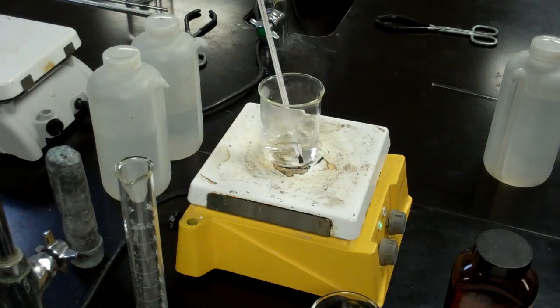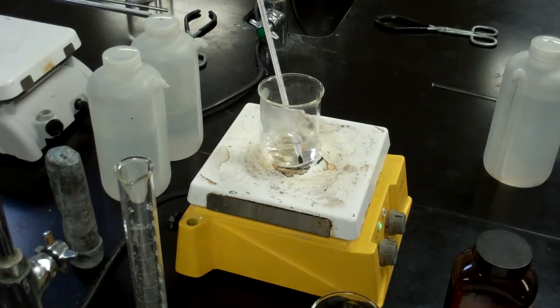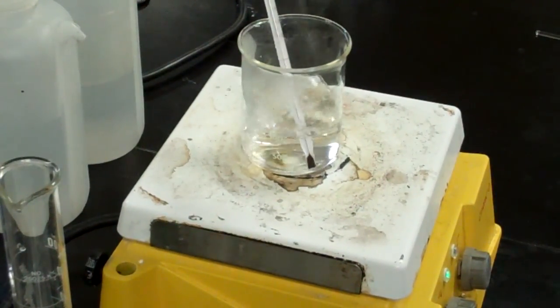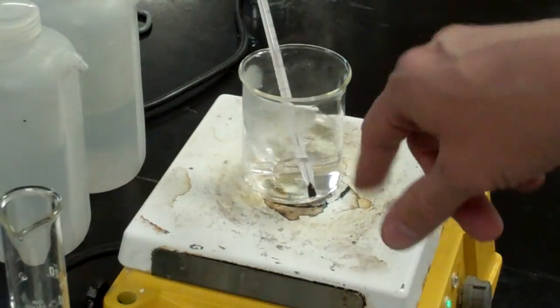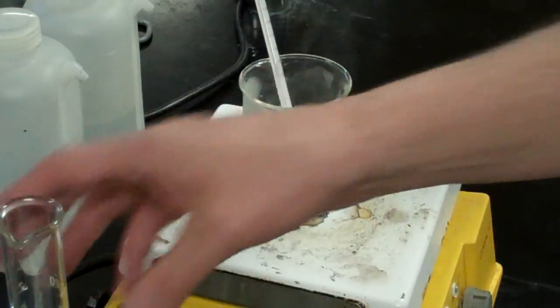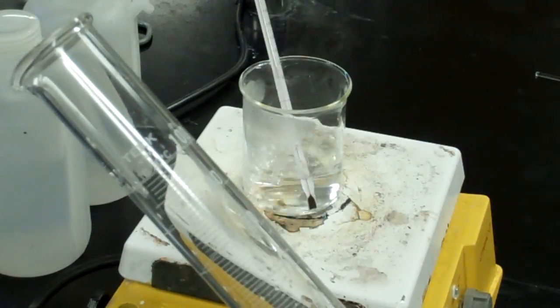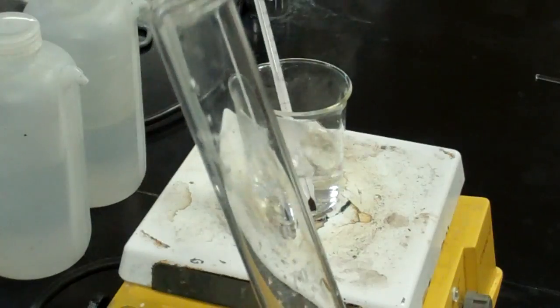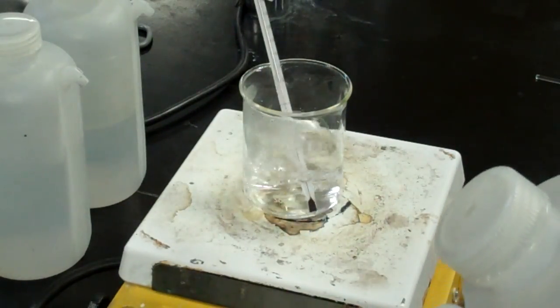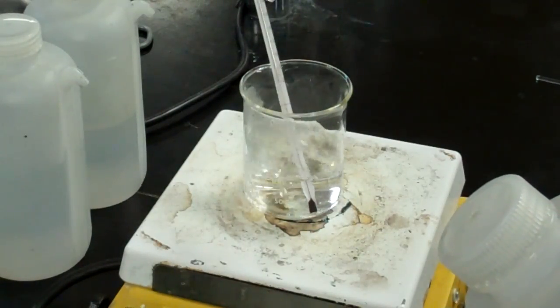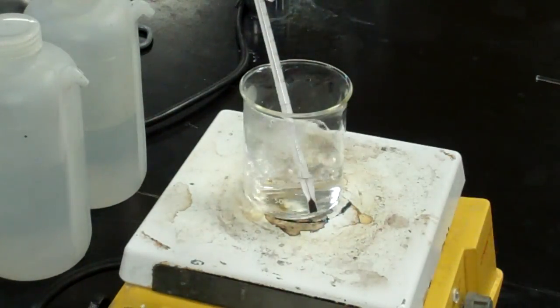Basically what you're going to do is you're going to get a beaker of water and you'll set it on your hot plate. By the way, we can fit two beakers on each hot plate so you'll be sharing that with a group member. You will place 100 milliliters of water in that beaker using a graduated cylinder. You'll want to put this on a level surface and you can fill this up to the 100.0 mark.